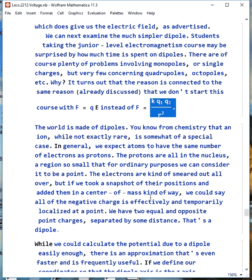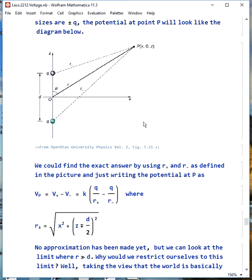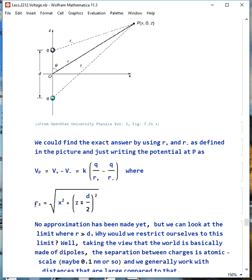Now, that would of course be a fluctuating dipole, because when we took a picture a fraction of a second later, the electrons would all be somewhere else. We could calculate the potential due to a dipole easy enough, but there's an approximation that's faster and is sometimes useful. We set up our coordinates so the dipole axis is in the z direction, positive charge up here in positive z, negative charge in negative z. Separation between the charges is d, and their sizes are plus or minus q, and we want to know what the potential is out here at this point P. We could find the exact answer using this r plus and r minus defined in the picture as k, q, 1 over r plus minus 1 over r minus. And we can use some geometry and trig to figure out what r plus and r minus have to be equal to. There's no approximation here. This would give us an exact answer.